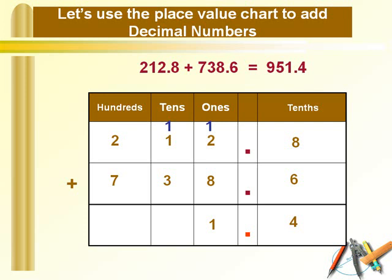Now simply add the digits at the 10's place. So 3 plus 1 plus 1 gives us 5. Now let's move to the digits at the 100's place. 7 plus 2 gives us 9. So we can say that our answer is simply 951.4.